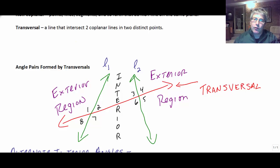And our transversal is the red line. It's the one that's intersecting those two lines, the two green lines. That's our transversal.